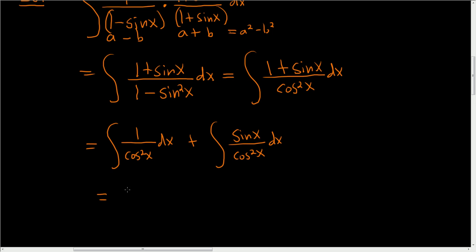1 over cosine squared is secant squared x dx plus, and we want to write this in terms of a familiar trig function. We can think of this as 1 over cosine times sine over cosine. Because cosine times cosine is cosine squared, and sine times 1 is sine, so no problems. 1 over cosine is secant x, and sine over cosine is tangent x.